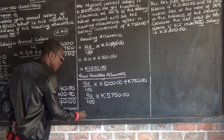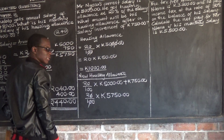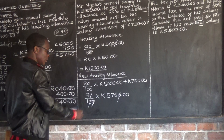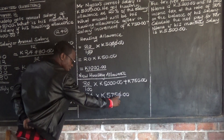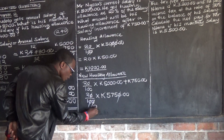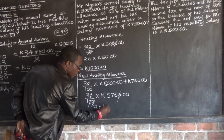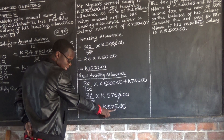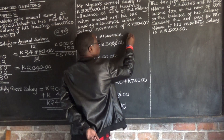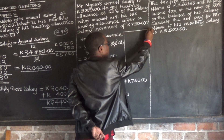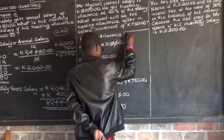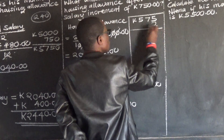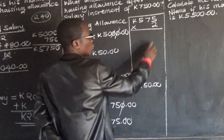Now we multiply 2 by 575. Working through: 5 times 2 is 10, carry the 1; 7 times 2 is 14 plus 1 is 15, carry the 1; 5 times 2 is 10 plus 1 is 11. So 2 multiplied by 575 gives us 1,150. Therefore, the new housing allowance after the salary increment of 750 kwacha is 1,150 kwacha.